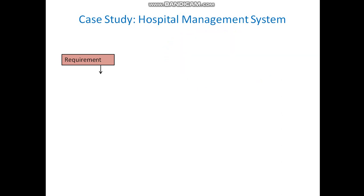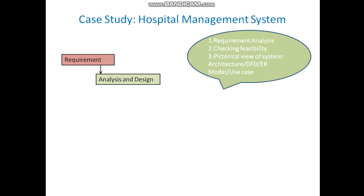The next phase is analysis and design. The complete requirements are now in the hands of the project management team, who analyze the requirements in more detail and check feasibility — whether what the client has requested is achievable. Once confirmed, they represent the requirements in pictorial form: architecture diagrams, data flow diagrams, ER diagrams (since a consistent database is needed), and use case diagrams, which are important for every product design. This is how the analysis and design phase works on this particular system.